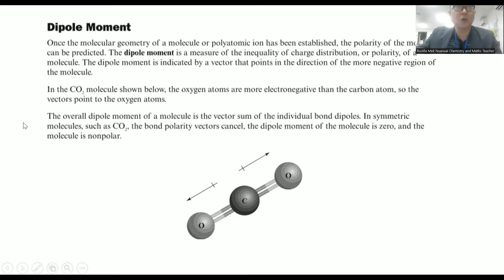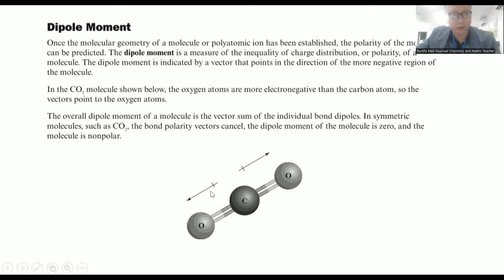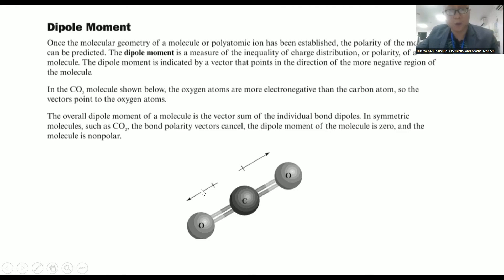Now that you know about electronic and molecular geometry of molecules — like tetrahedral, trigonal planar, and those shape names — we need to apply that with the polarity stuff. What the dipole moment is: we're going to draw these vectors, which are vectors of polarity, or the difference in electronegativity. The tip of the arrow always goes towards the atom that is more electronegative, and the tail will be on the less electronegative atom.